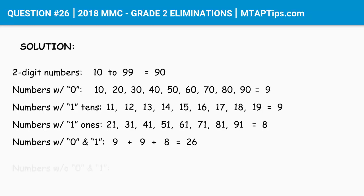So to know that, we'll just have to do 90, which is the total number of two-digit numbers, minus 26, which is the numbers with 0 and 1 digit. And the answer is 64. There are 64 numbers that do not contain 0 and 1 digit.